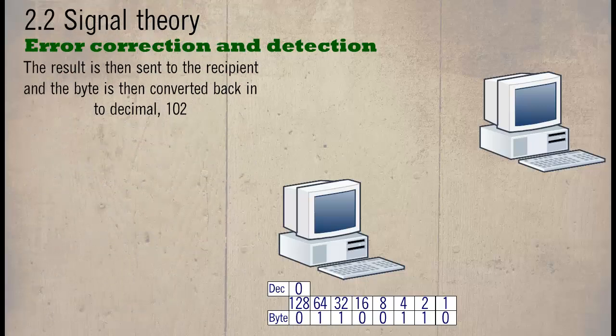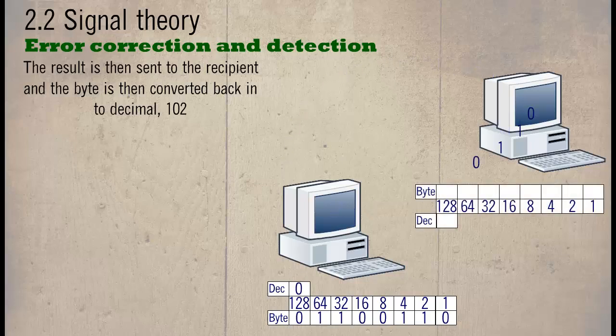The result is then sent to the recipient and the byte is then converted back into the decimal 102.